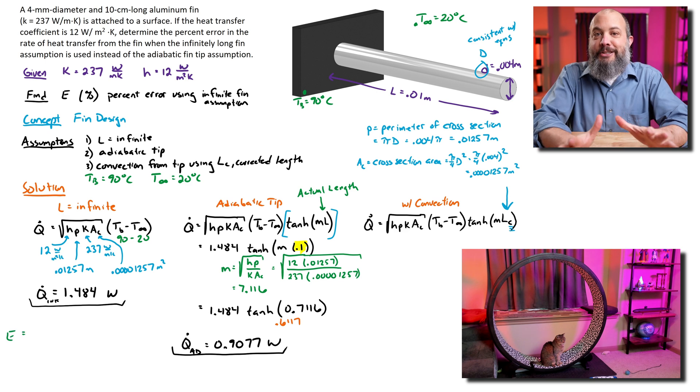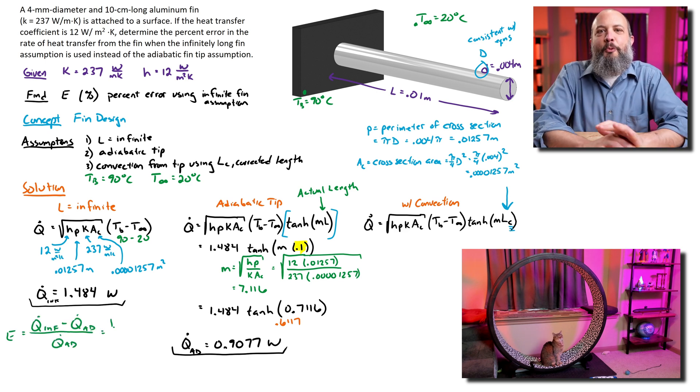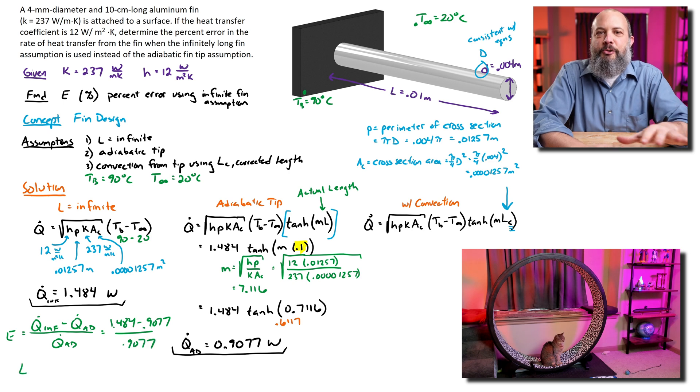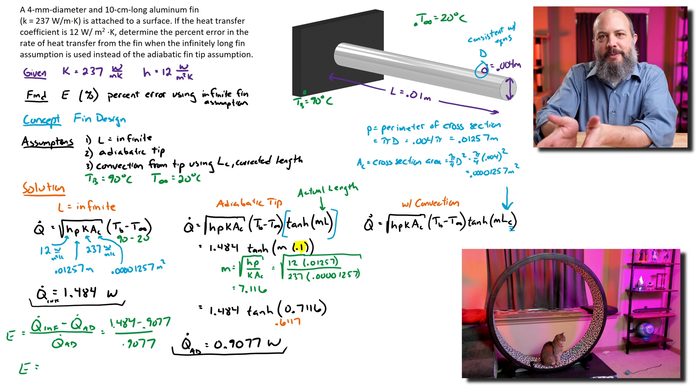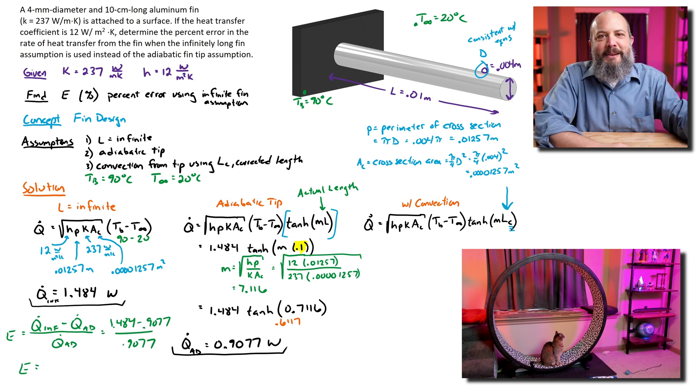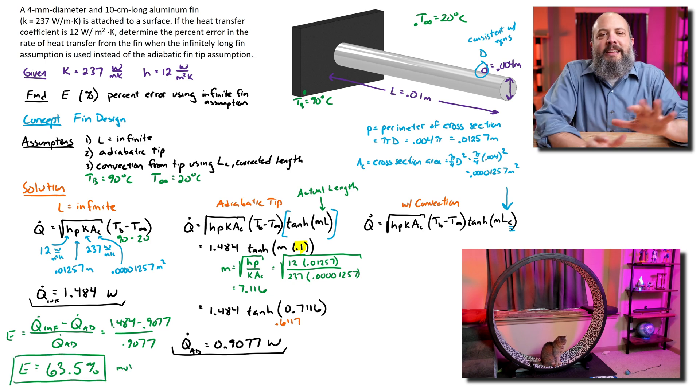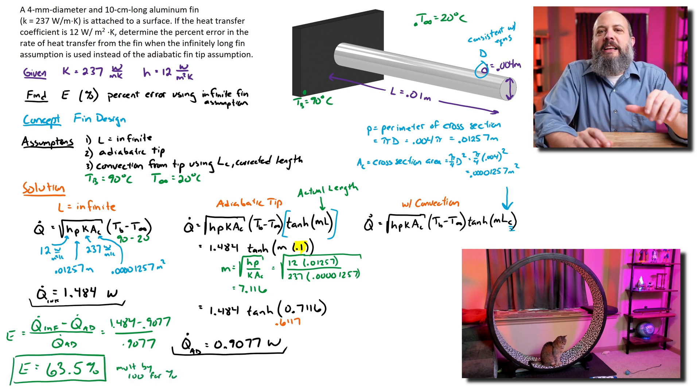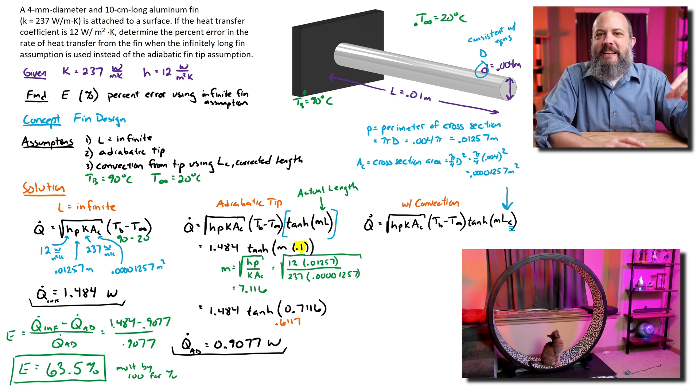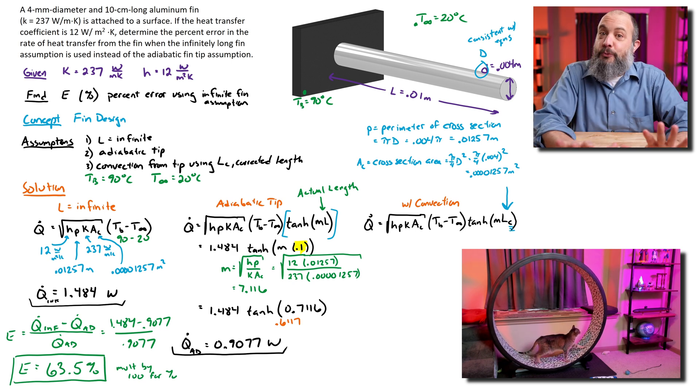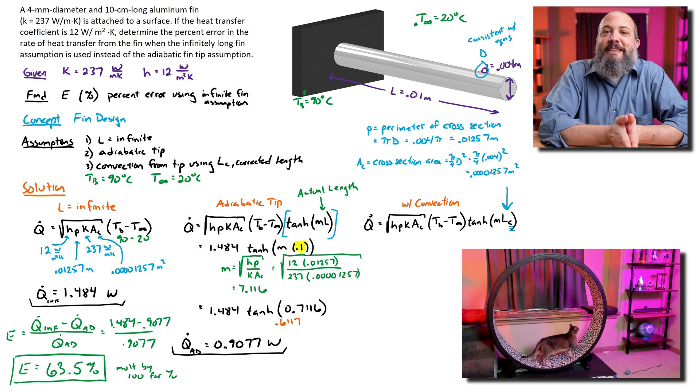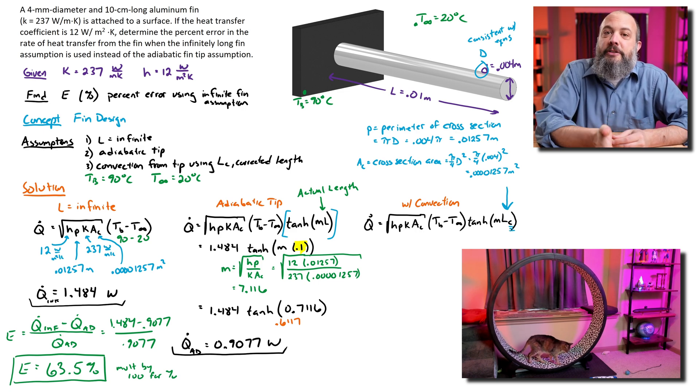So to actually answer the original question in the problem statement, what is our percent error when using the infinite pin length assumption as compared to the insulated tip assumption, we have our Q infinite minus Q divided by the Q. So 1.4 minus 0.9 divided by 0.9 gives us an answer of 63.5%. If we use the infinite fin length assumption, our answer will be 63% too high. So for this problem, that is really bad error. So you would not want to use the infinite length assumption here for this problem.